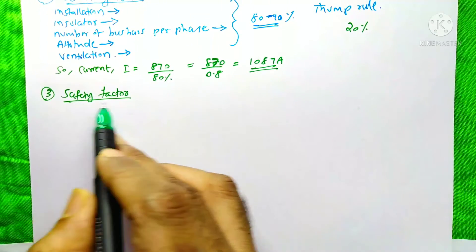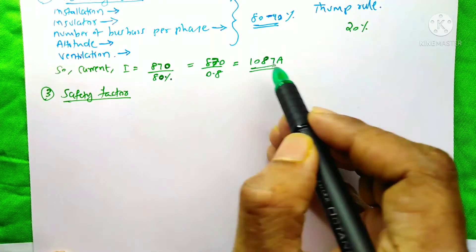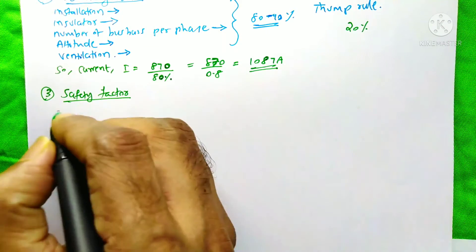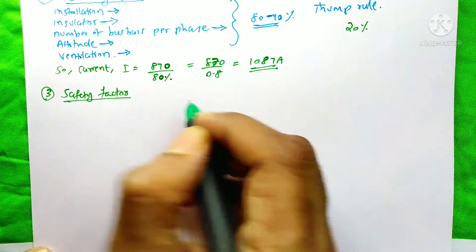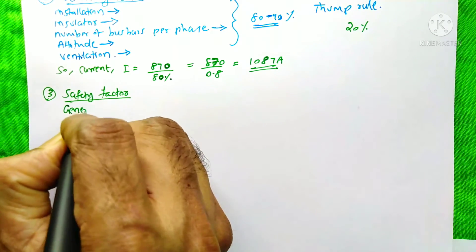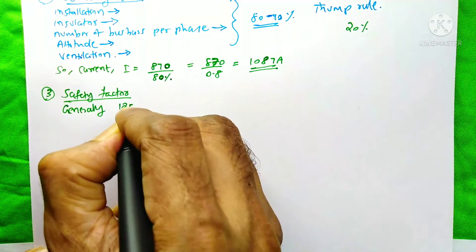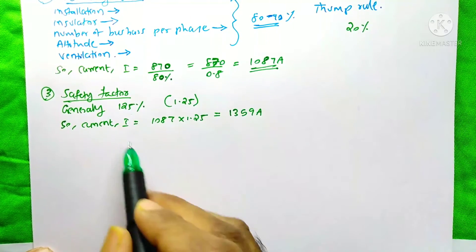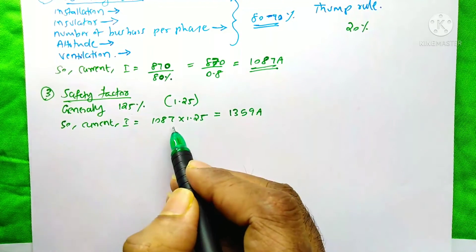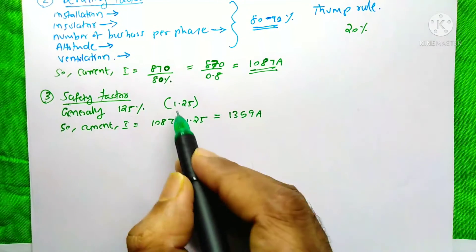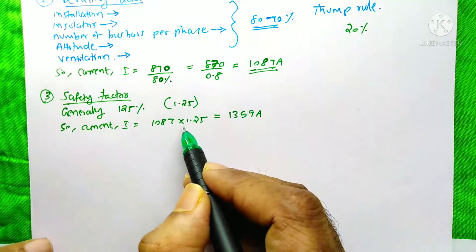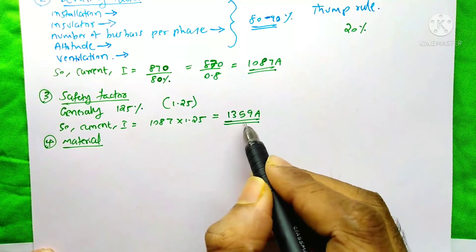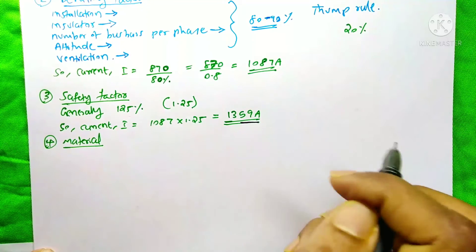The next step is applying the safety factor. The 1087 amps does not yet include a safety margin. We generally use a safety factor of 125% in the industry — a factor of 1.25. So 1087 × 1.25 = 1359 amps. With this step, the current calculation is complete.